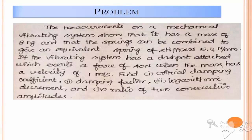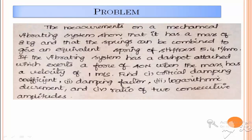In this problem, measurements on a mechanical vibrating system show that it has a mass of 8 kg, and the springs give an equivalent spring stiffness of 5.4 Newton per millimeter. The vibrating system has a dashpot damper attached which exerts a force of 40 Newton when the mass has a velocity of 1 meter per second. We are asked to find the critical damping coefficient cc, damping factor zeta, logarithmic decrement delta, and the ratio of two consecutive amplitudes.